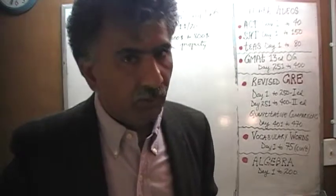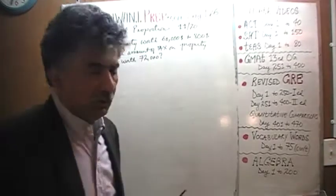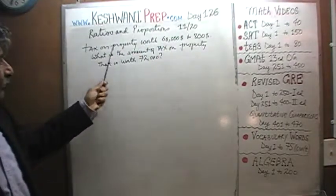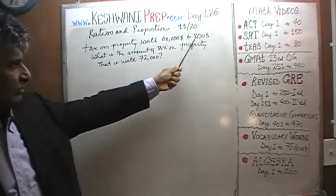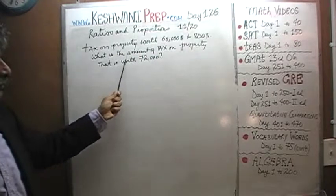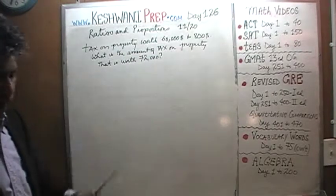The problem for today is already on the blackboard. Let's take a look at it. We are told that the tax on the property that is worth $60,000 is $800. Question is, what's the amount of tax on the property that is worth $72,000?